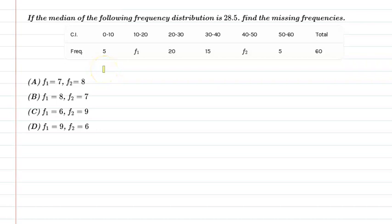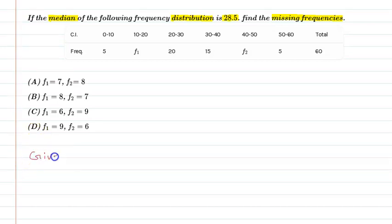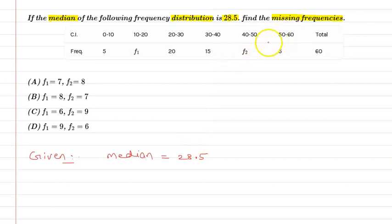Hello friends. First of all, let us understand the question. The question is: the median of the following frequency distribution is 28.5 — find the missing frequencies. So let's start. The median is 28.5 and we need to find the missing frequencies, which are F1 and F2.